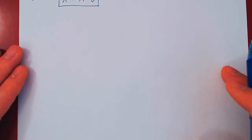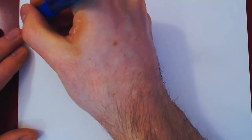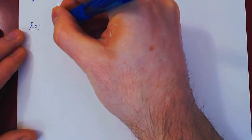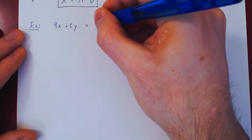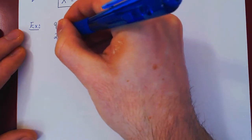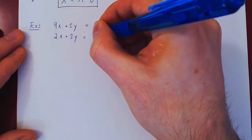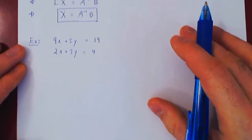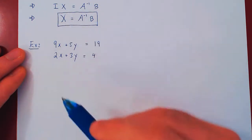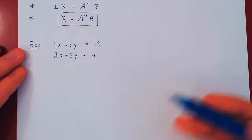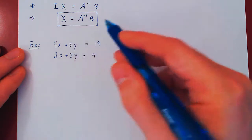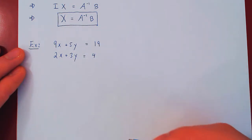OK, so here's the system. 9X plus 5Y equals 19, 2X plus 3Y equals 4. Now, before we solve the system using this trick, we'll solve the system using row reduction, and then we'll solve it using this new method, and see that they are more or less equivalent.